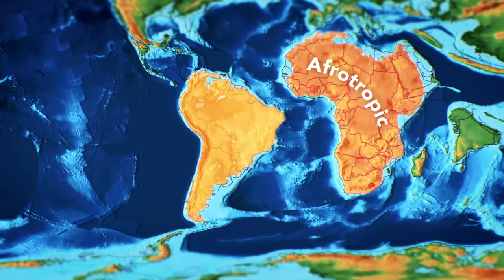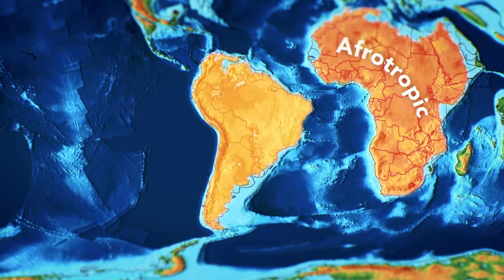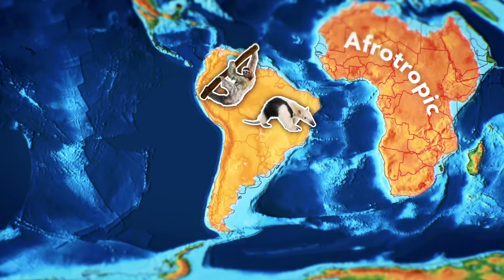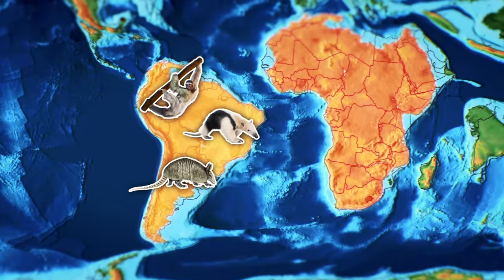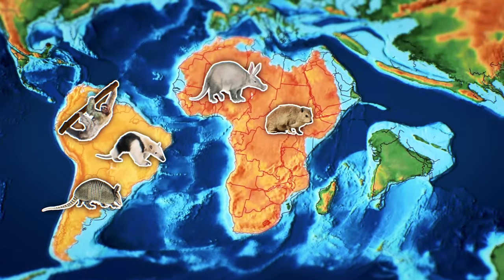From an assortment of common ancestors, South America ended up with animals like the sloth, anteaters, and the armadillo, while the Afrotheria became things like aardvarks, hyraxes, and tenrecs.